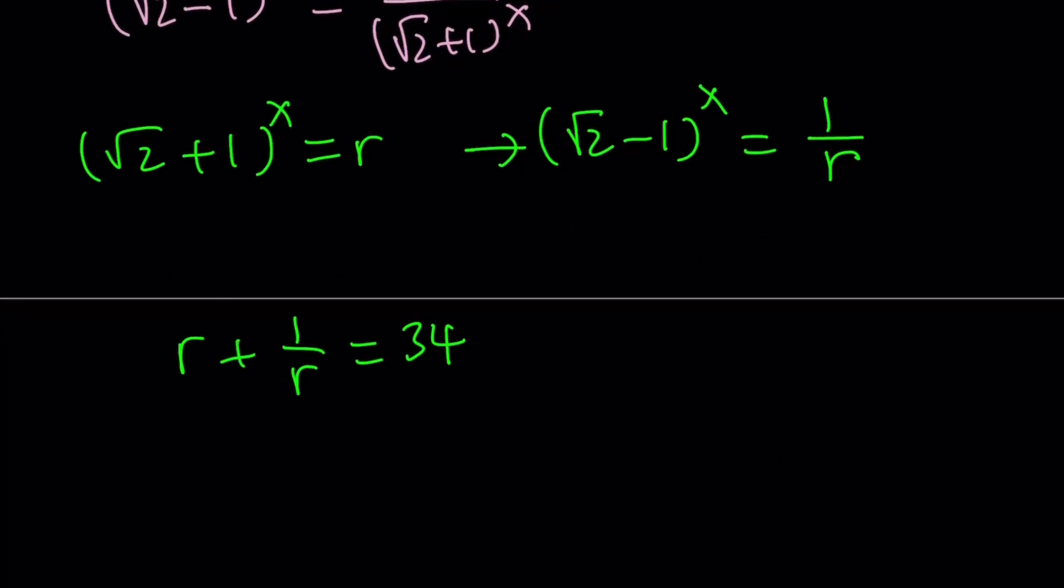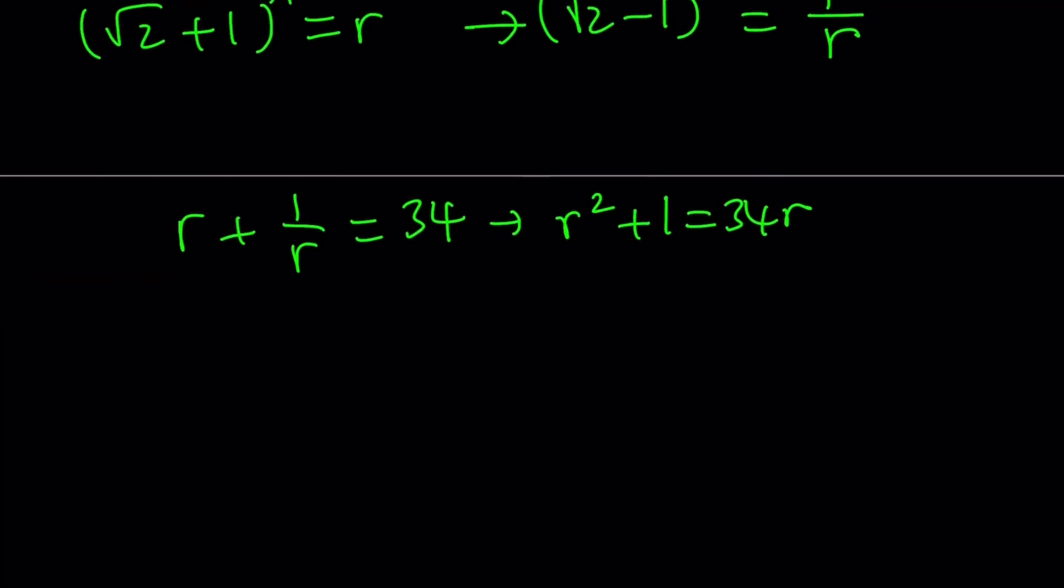This is going to turn into a quadratic equation. If you multiply everything by r, we get r squared plus 1 equals 34r. Let's go ahead and bring the 34r to the left hand side. And then we're going to have our quadratic. How do you solve this quadratic? You can definitely use the quadratic formula or we can complete the square. Let's go ahead and do that because it seems a little easier. So subtract 1 from both sides.